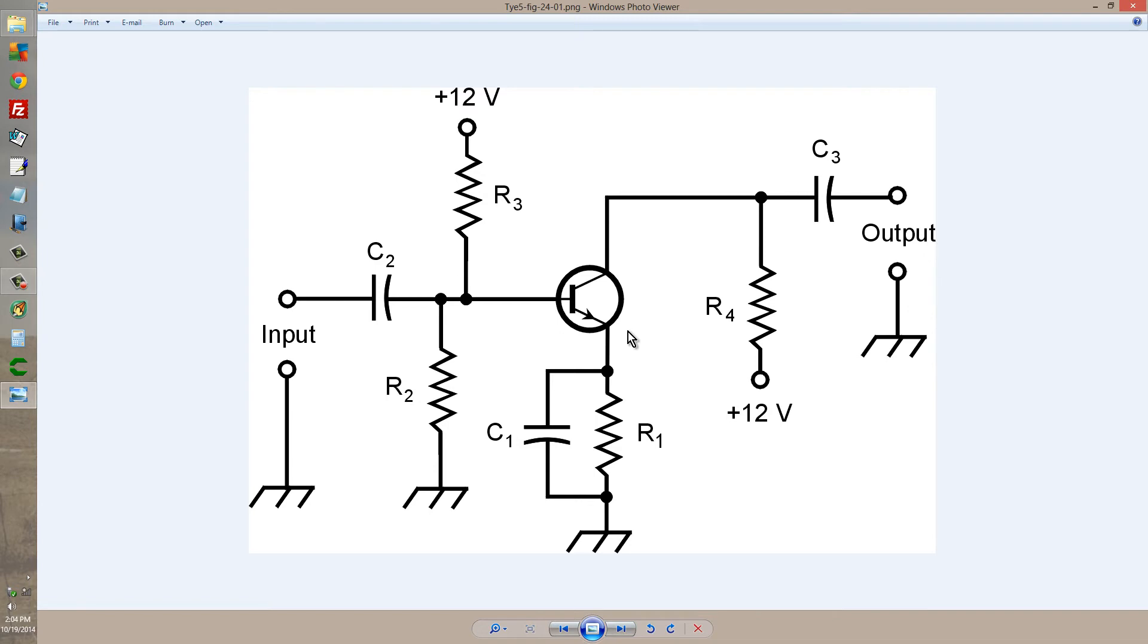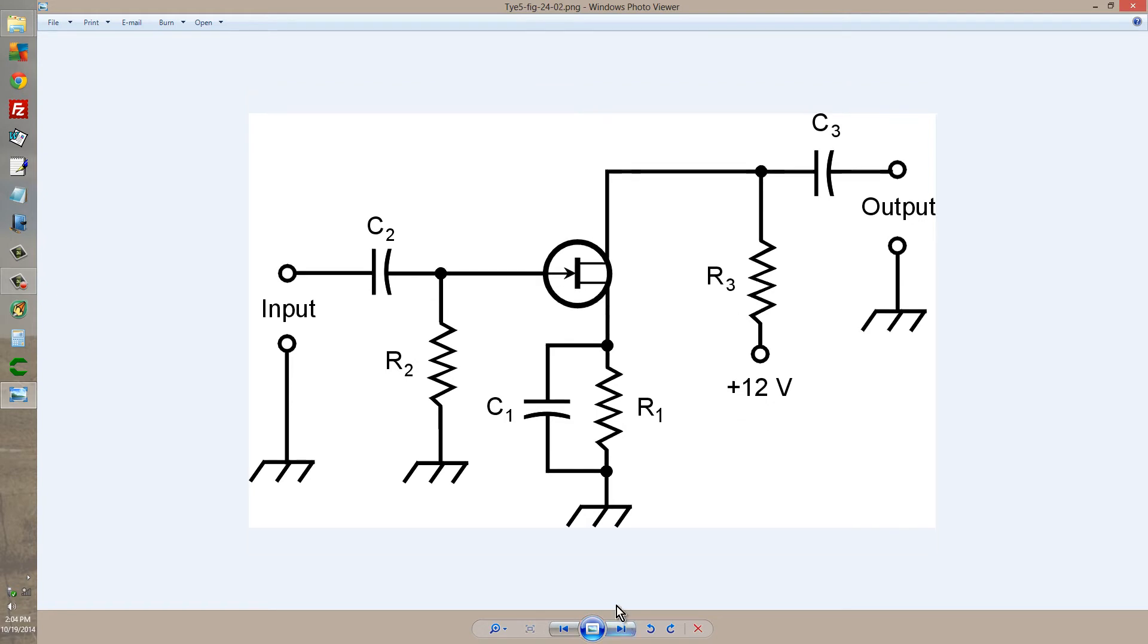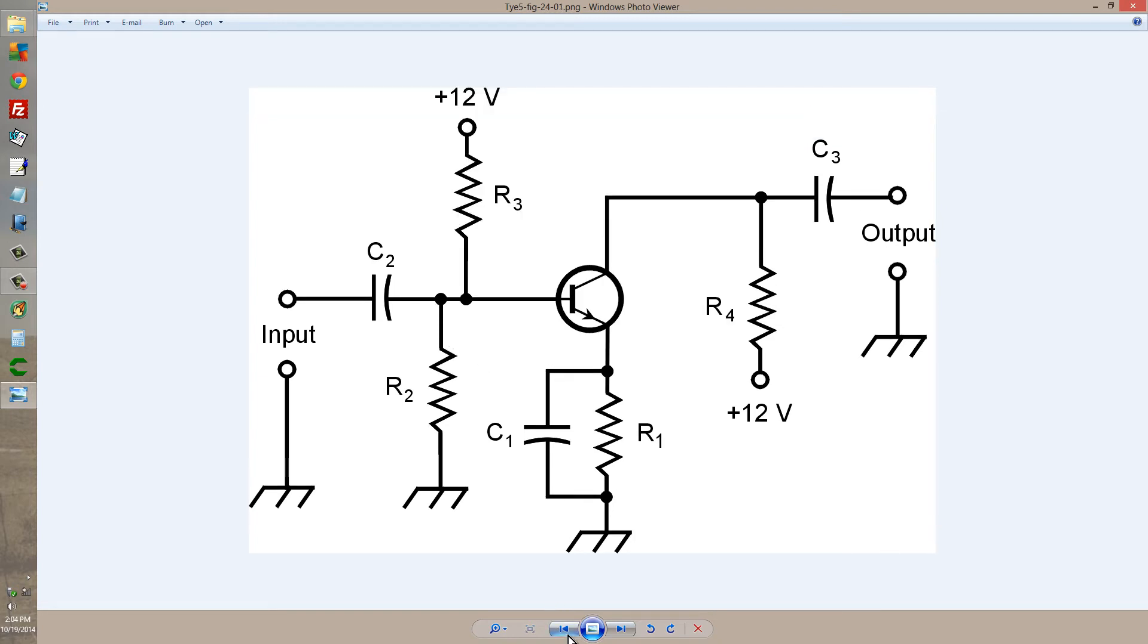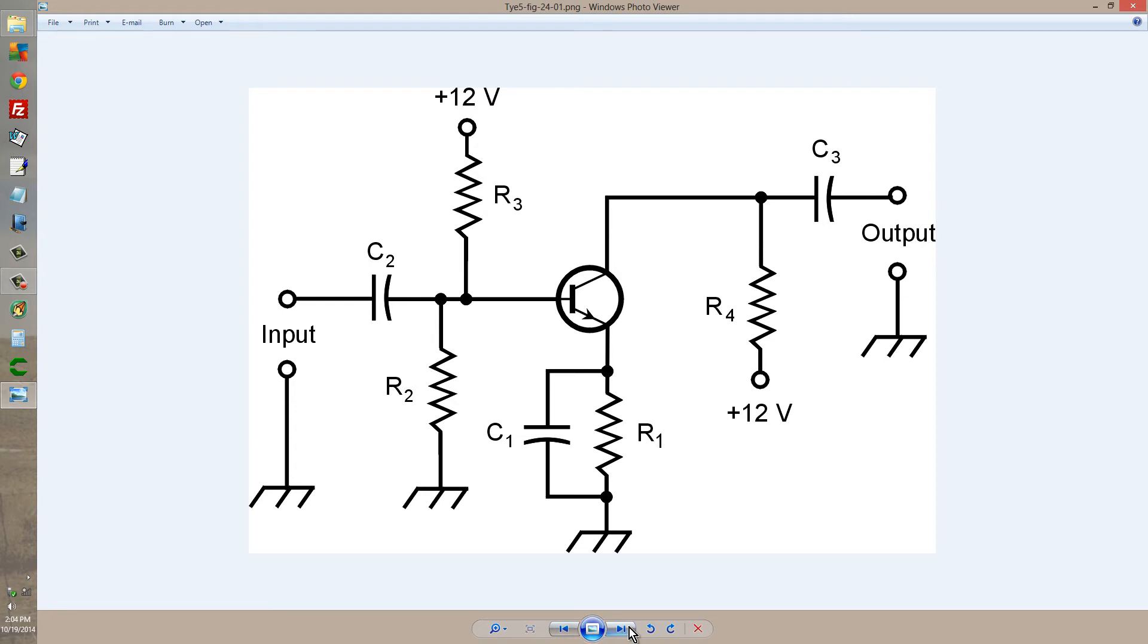Now, the equivalent field effect transistor, JFET, or junction field effect transistor, is an N-channel junction field effect transistor. Now, notice this is basically the same circuit as this. There's scarcely any difference whatsoever, except for one thing.